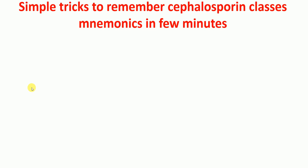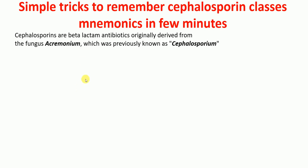Cephalosporins are beta-lactam antibiotics, which are originally derived from the fungus Acremonium, which was previously known as Cephalosporium. These are antimicrobial agents. They have a beta-lactam ring, that's why they are called beta-lactam antibiotics, and they are originally derived from the fungus Acremonium, which was previously known as Cephalosporium.